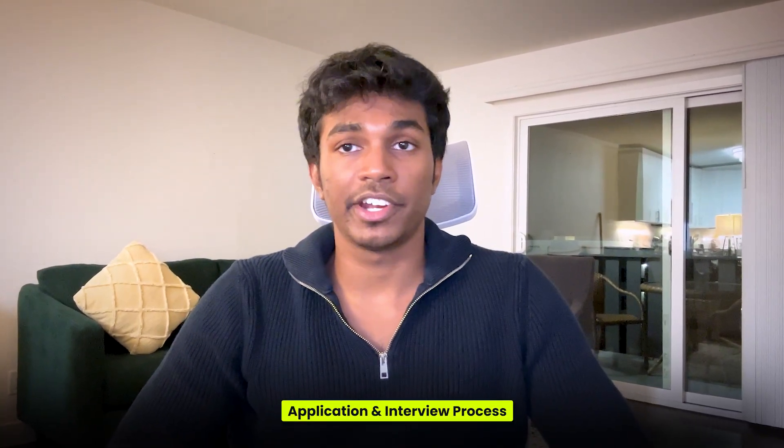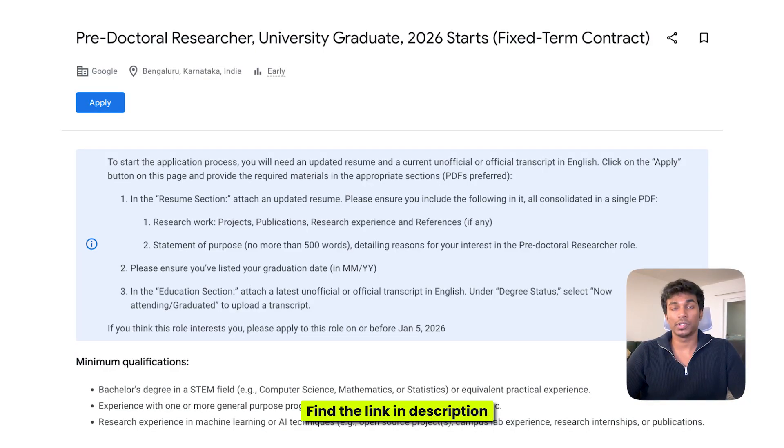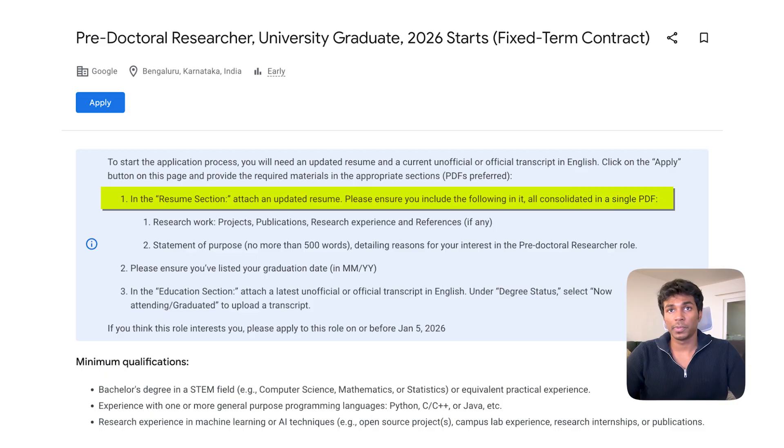If by now you're thinking this program might be right for you, let's dive into the application process and the screening process for this. The application is straightforward. You apply through Google Careers on the pre-doctoral researcher role. This is open till January 5th, 2026. For this, you require a resume and your transcript. In your resume, you have two important asks: one is the research work and the other is a statement of purpose.